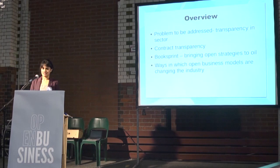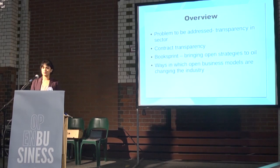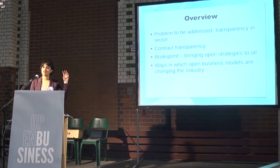The problem that we try to address with this project was contract transparency and general transparency in the oil industry. When you think of oil, you think of secrecy and corruption — it's generally thought of as a closed industry. One emerging norm of best practice at the moment is contract transparency, where a government decides to publish all of the oil contracts that they've signed with international oil companies.